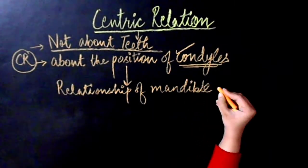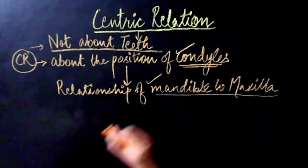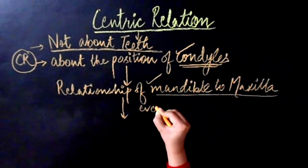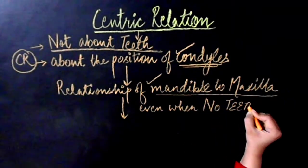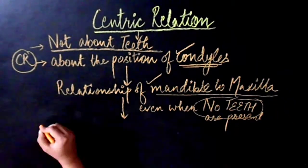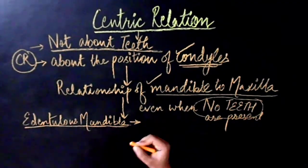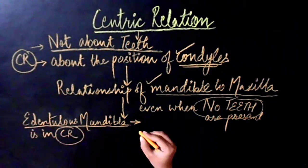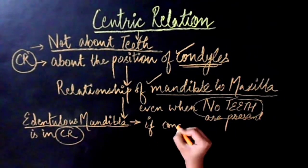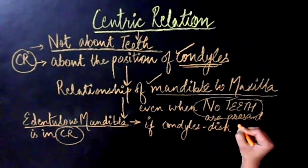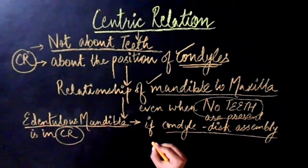The edentulous mandible is still in CR. That means even when there are no teeth present in a patient's mouth, the edentulous mandible can still be in centric relation if the condyle disc assembly is completely seated. So centric relation is not about teeth, it is about the position of condyles.